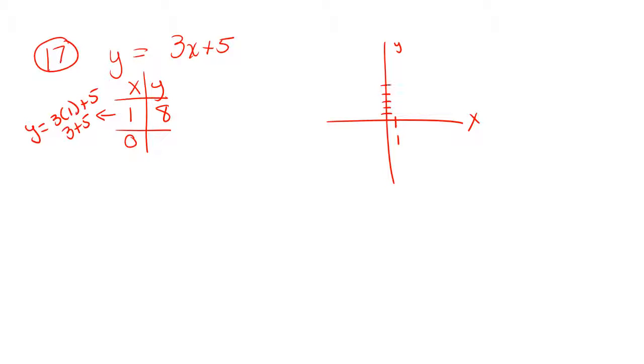Number 17 is another equation, and this time you have to graph the linear equation. Make yourself a chart with an x and a y, and choose two simple numbers like 1 and 0 to substitute into this equation. If I take a 1 and substitute it in for the x, 3 times 1 is 3, and 3 plus 5 equals 8. So on the graph I will have a point at 1 and positive 8, and I plot that point.